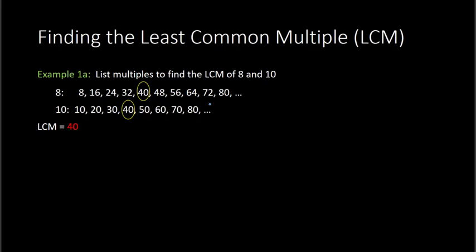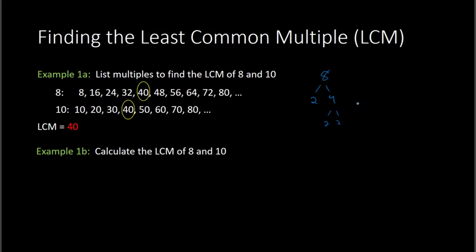Now, we don't want to have to list all the multiples every time, because that's going to be very tedious, especially when you have large numbers. So we want a quicker way to do this. The way to do this is we take the 8 and the 10 and we find the prime factorization of each of those. So 8 would be 2 times 4, and 4 is 2 times 2, so 8 would be 2 times 2 times 2. And 10 can break down as 2 times 5, and that's it.